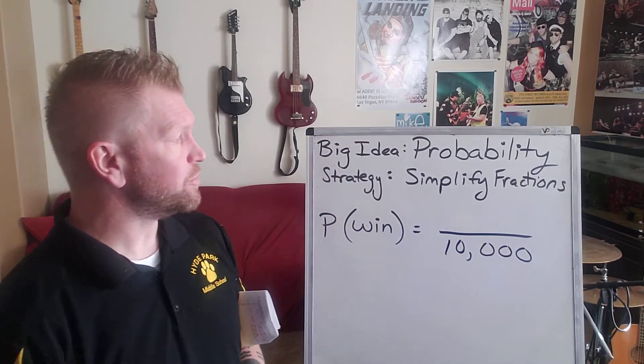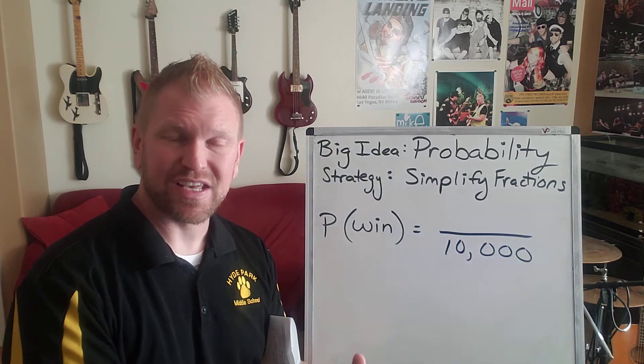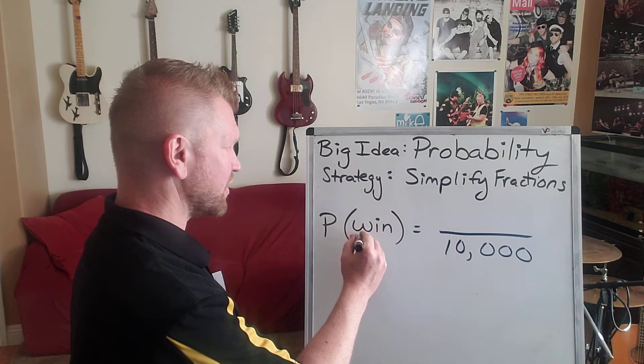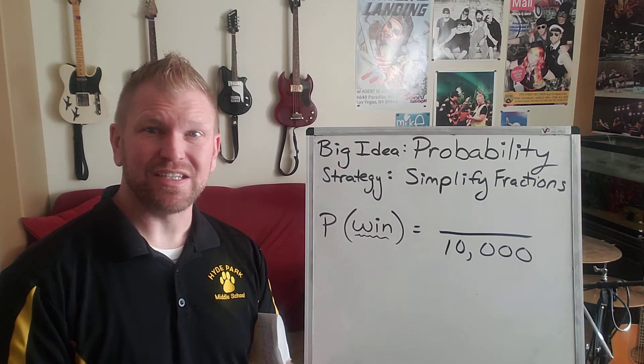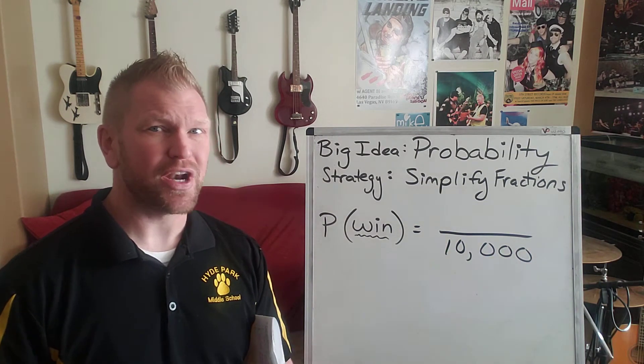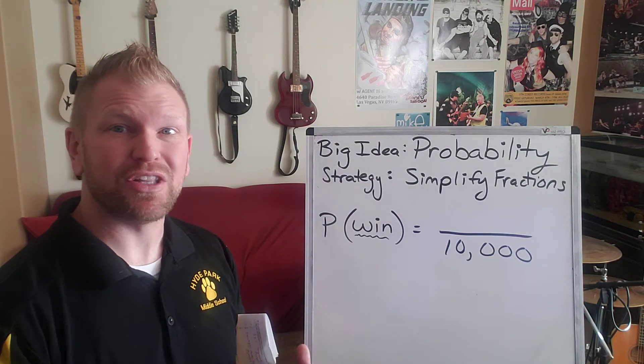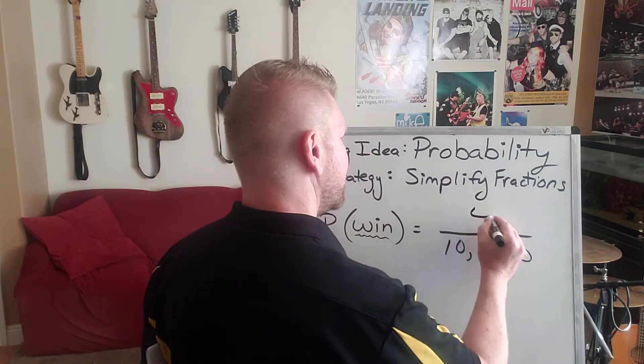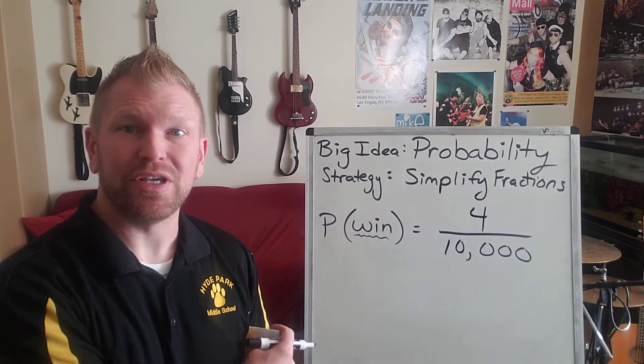Alright, what's the numerator going to be? That's how many chances are there for success in this case. How many chances are there for this family to win? So remember, it's a family of four and each of them has a ticket in there. So they have more than just one opportunity to win. They have four chances to win because there's four tickets that belong to that family. So it's a four out of 10,000 chance or probability.